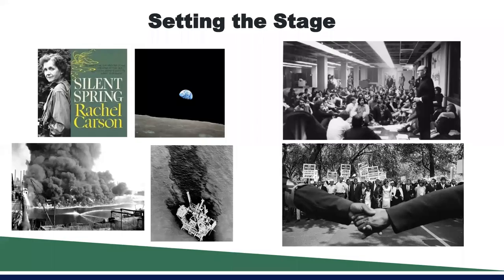I want to begin by setting the stage for what was happening prior to the first Earth Day. At the beginning of the 1900s, the United States saw a huge burst in industrialization, and a lot of those side effects like pollution and smog were sometimes seen as a positive — those were signs of our economy growing. As time went on throughout the 1900s, there were key moments where our attitudes toward the environment and our awareness of what we were doing to it started to shift.